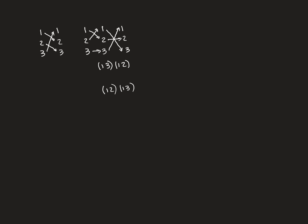We're going to do this with a proof by contradiction, but before we begin, let's talk about inverse elements with a concrete example. We'll take the 3-cycle (1, 2, 3). This can be split into a composition of transpositions: (1, 2) followed by (1, 3). If you want the inverse element, all you need to do is reverse the order of the transpositions.